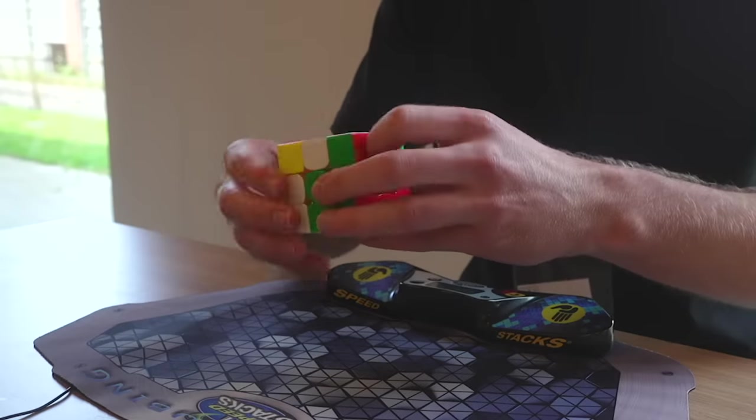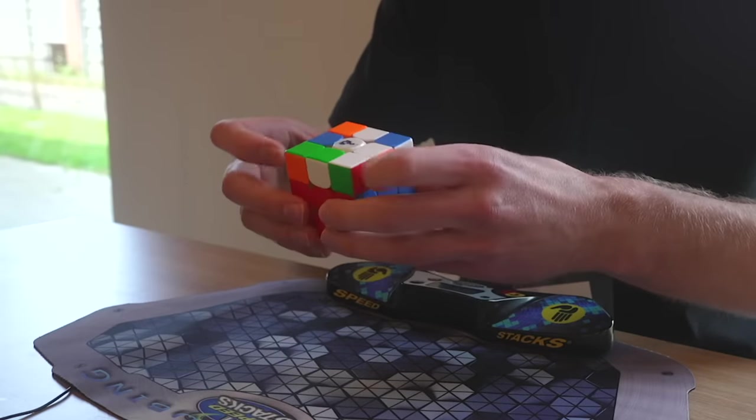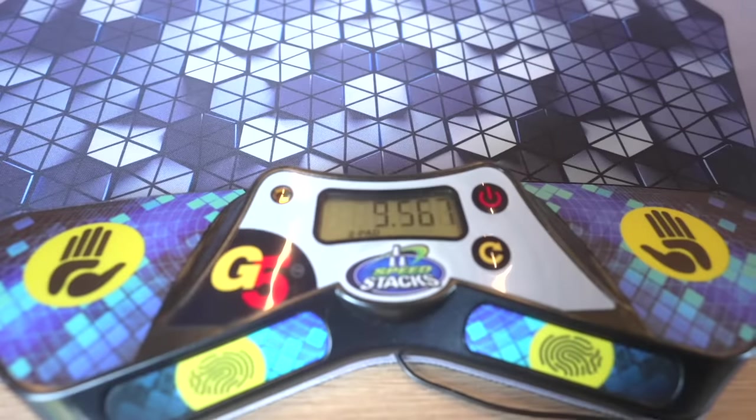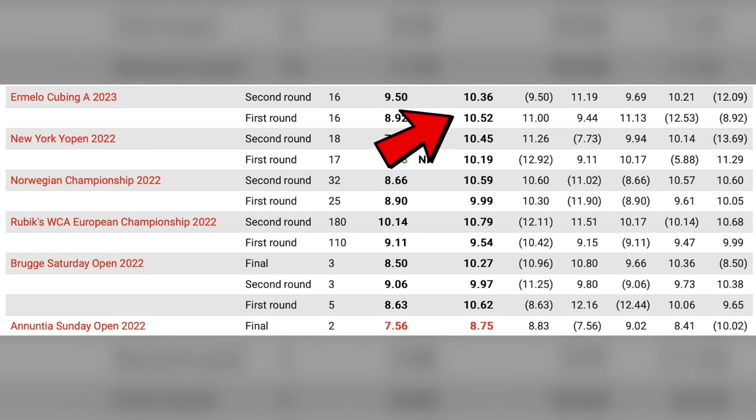I did some rotations I didn't need to do, like you can see me do double rotations here, but the last layer was really good which gave me a 9.5 which isn't great. If you look at my last competitions you can see that I messed up all of them except for the 8.75 PR average.